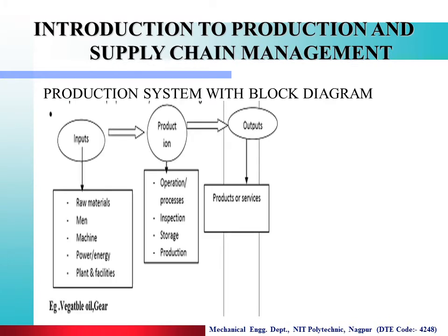Here we see the production system with a block diagram. The inputs are raw material, man, machine, power, energy, plant and facilities. In the production stage, various operations take place: process, inspection, storage and production. And the output that you get is products, services and finished goods. That is the simple block diagram of the production system.